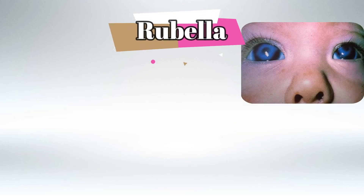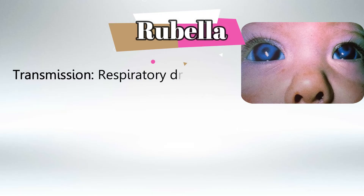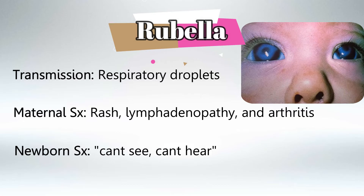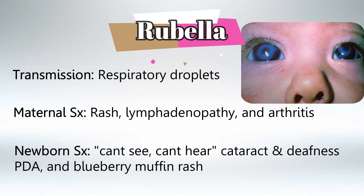R in TORCH stands for rubella and transmits via respiratory droplets. Maternal manifestation would be rash, lymphadenopathy, and arthritis. The newborn with rubella cannot see and cannot hear, so he'd have cataracts in the eyes and deafness. He'd also have patent ductus arteriosus in the heart and the classic blueberry muffin rash.